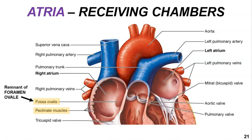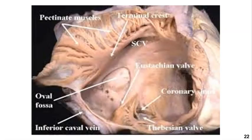The fossa ovalis is a remnant of the foramen ovale. The foramen ovale is a small opening between the right and the left atrium that helps blood in the fetal cardiovascular system bypass the pulmonary circuit, because during fetal development the lungs are not yet operational. The foramen ovale is a small passageway that allows blood to travel from the right atrium to the left atrium. In this image of a dissected right atrium we see the openings to the superior vena cava, the inferior vena cava, the pectinate muscles, as well as the fossa ovalis.